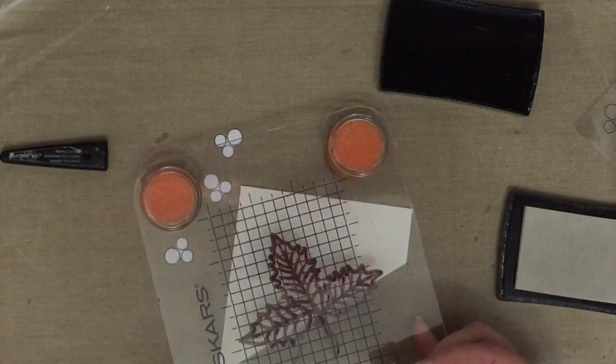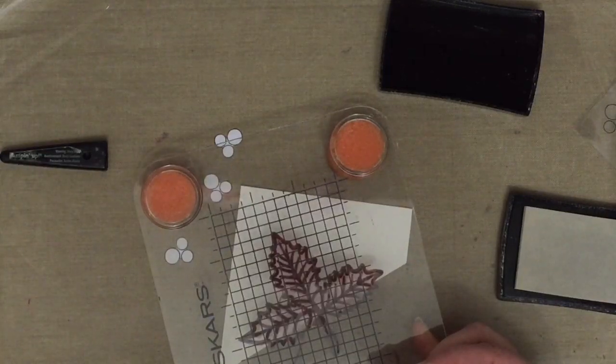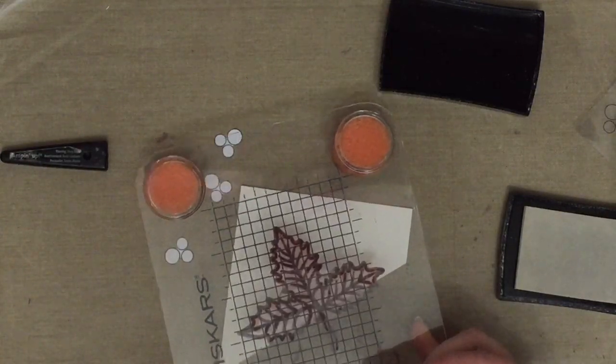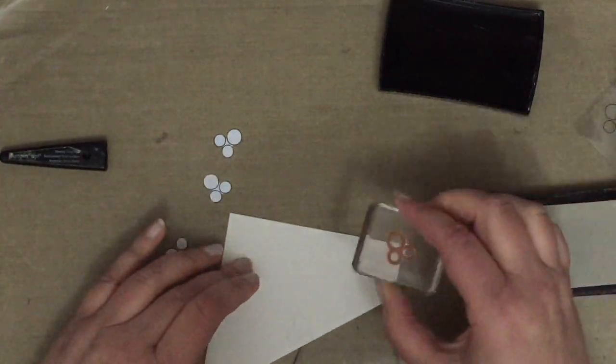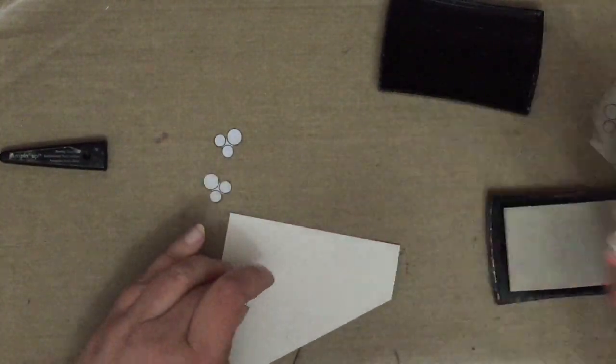So what I'm doing right now is I'm just sort of visualizing in my head where all the leaves are going to go to make this pattern, and then using that to decide where I'm going to stamp this first three lots of berries.